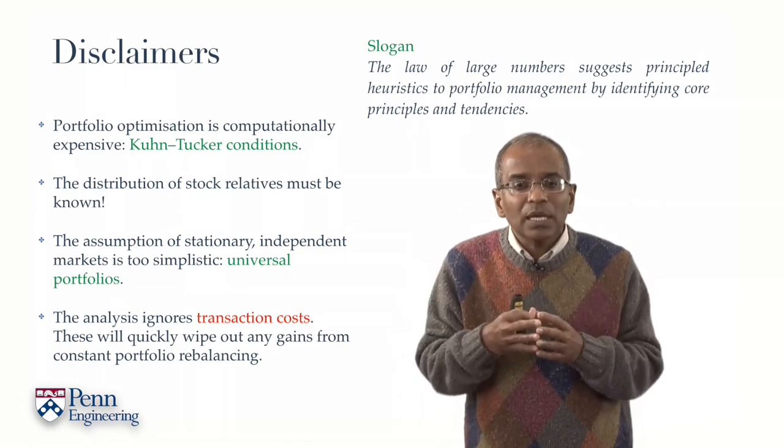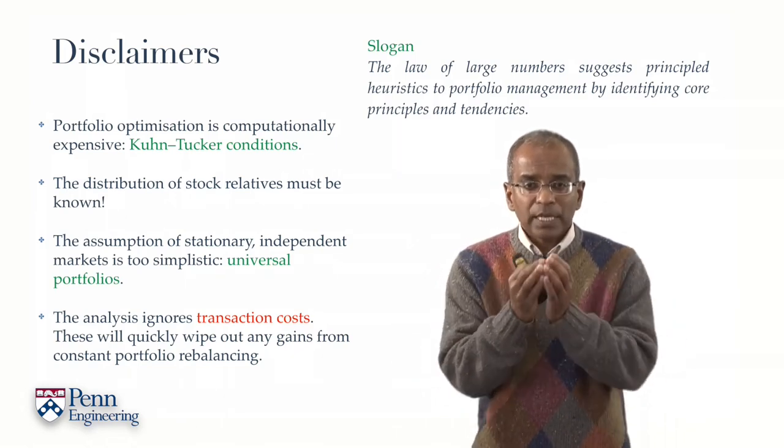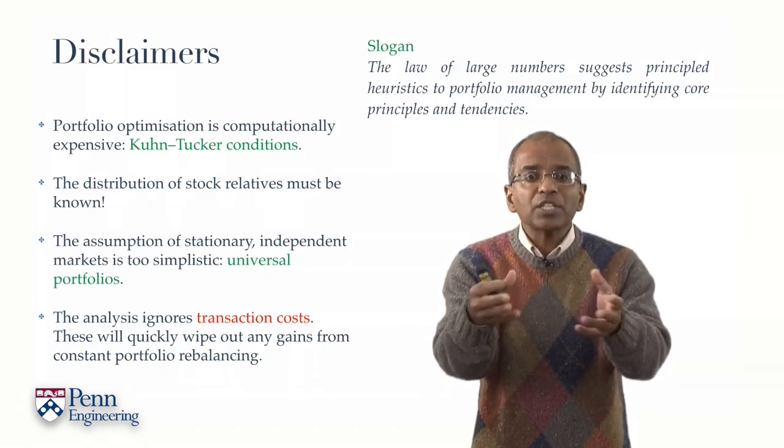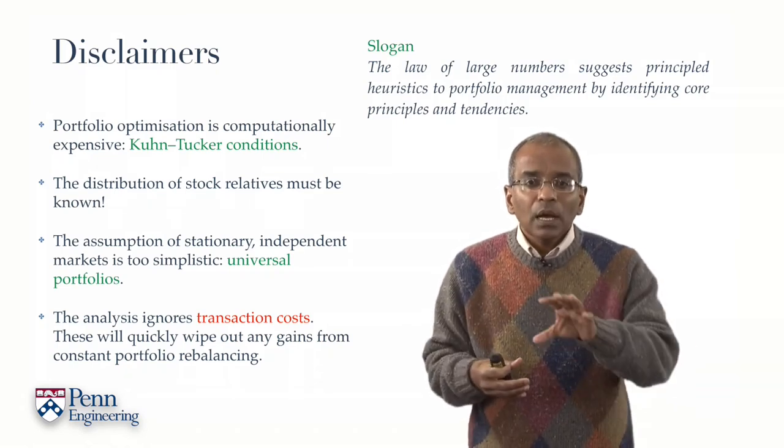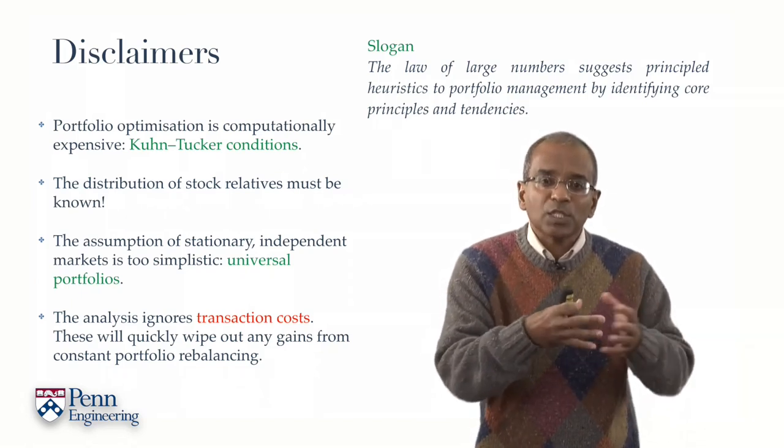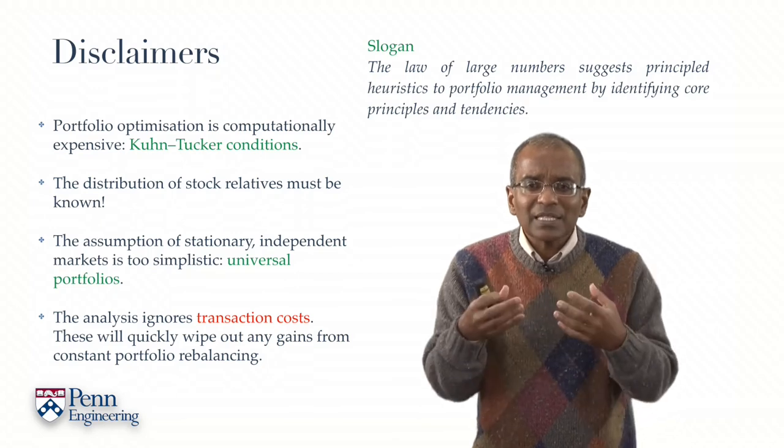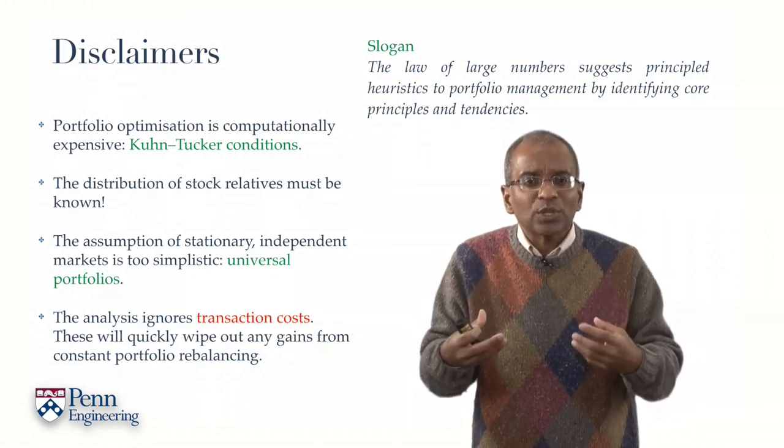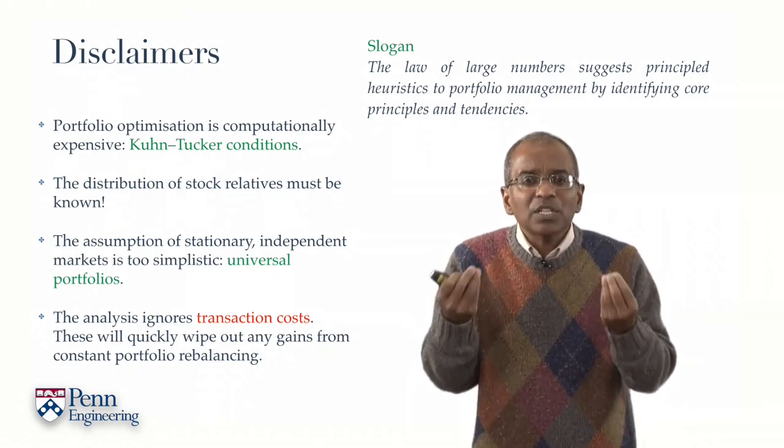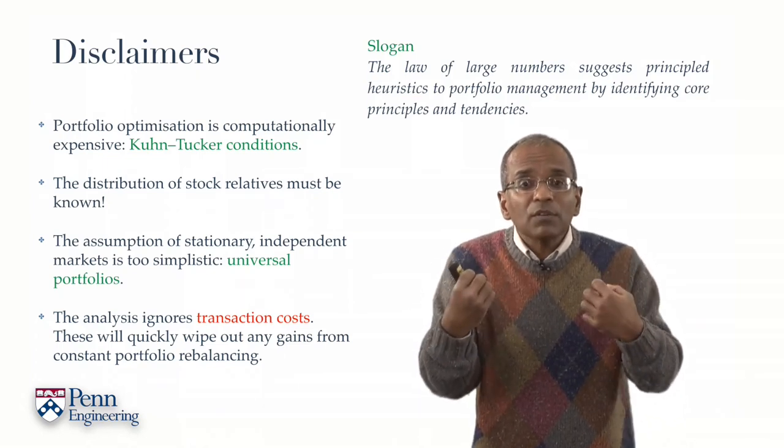And it gives us certain guideposts, certain things which are potentially feasible in terms of the growth of wealth, of course, in an idealized world. In practice, we move away from the idealism and say, given that we have a messy real world, what can these principles teach us about actual investment? And again, the law of large numbers tells us here are some principled ways to think about it. Here are some principled heuristics that we can extract from the rulings.